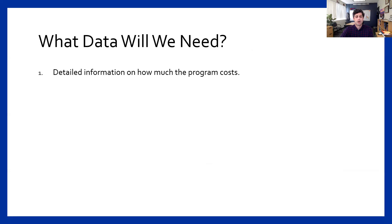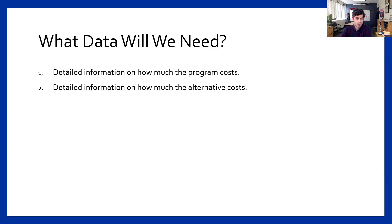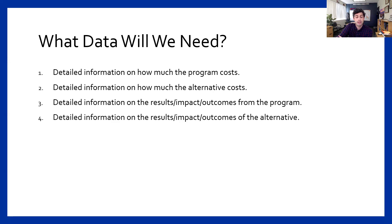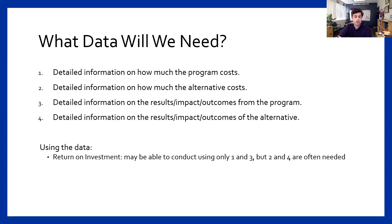What type of data might we need? We definitely need to know how much something costs — very detailed and specific to your instance. We need to know how much an alternative costs in many contexts. We definitely need information about results, impacts, outcomes, or outputs from the program — with one exception. And ideally, some information about the alternative. When you have cost data and outcome data, you might be able to do an ROI. But it's really hard to calculate an ROI when we don't have anything to compare costs and outcomes to.